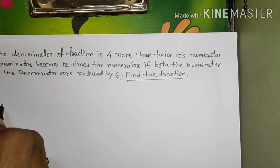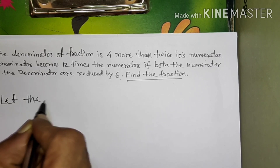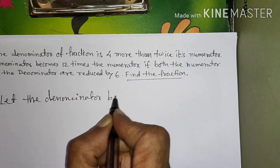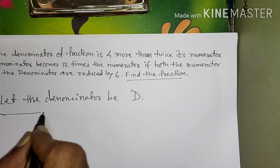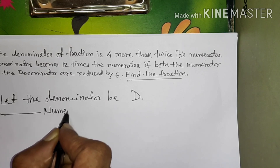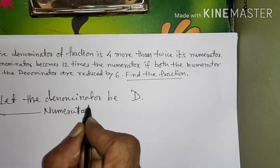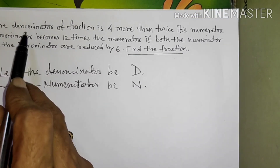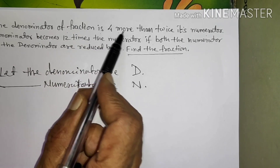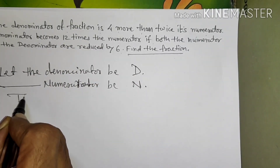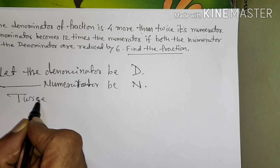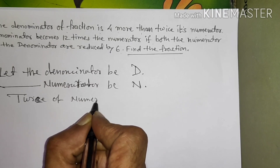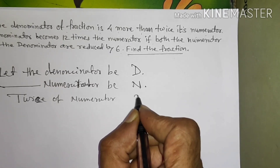In short, first we will say: let the denominator be D, and let the numerator be N. Now, the condition was — the denominator of fraction is 4 more than twice its numerator. Twice of numerator is 2N.